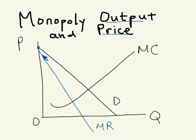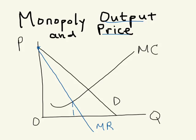The marginal revenue tells us the benefit of producing one more unit of output; the marginal cost tells us the cost of producing one more unit. So as long as marginal revenue is greater than marginal cost, the firm wants to increase output. We stop when it's a tie — where marginal revenue is just equal to marginal cost. That is the monopoly output, which we call Q sub M for the monopoly quantity.